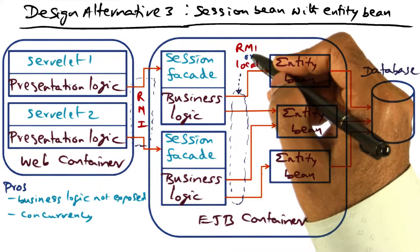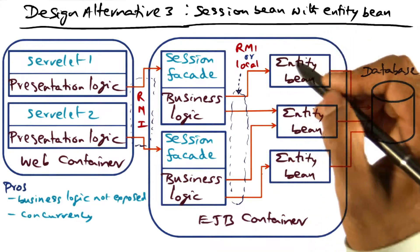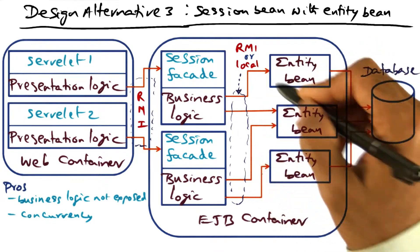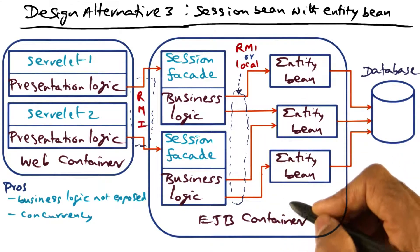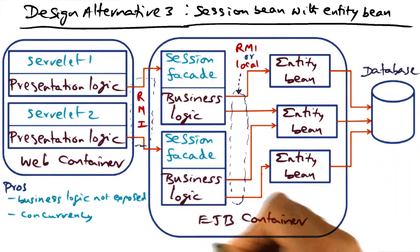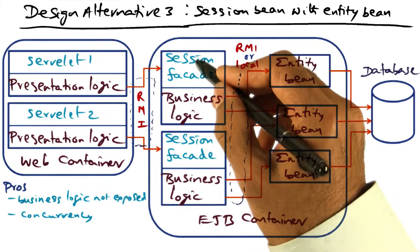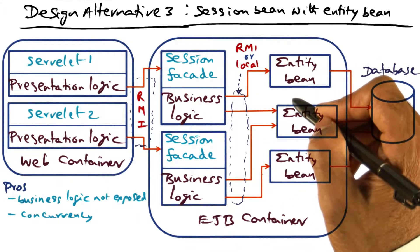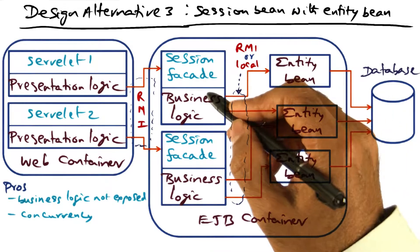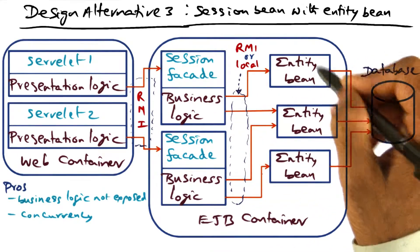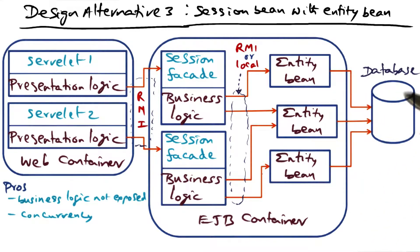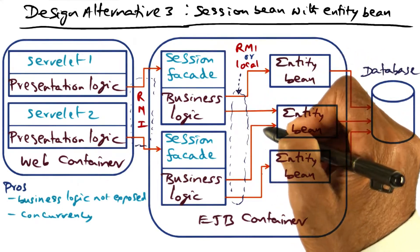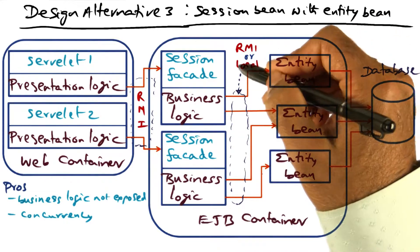Alternatively, we can choose to construct the interface between the session facade and the entity bean using local interfaces. Using RMI allows us to keep the entity bean wherever we want in the network. On the other hand, if we choose the local option, we co-locate the entity beans in the same EJB container as the business logic and the session facade. The advantage is that because it is local, we don't incur network communication to fetch data from the entity bean.